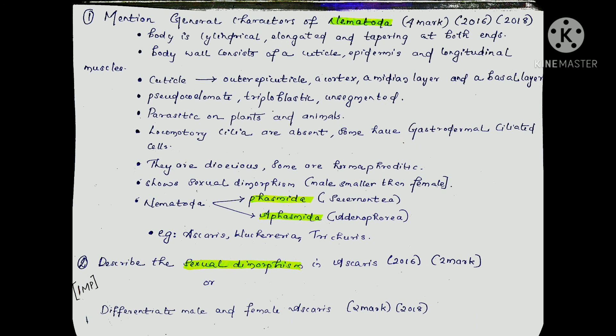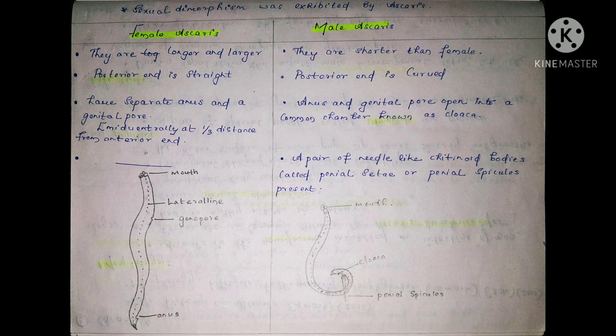First of all, we know Ascaris. Sexual dimorphism is important — it appeared in 2016 for random marks. Differentiate male and female Ascaris — this was asked in 2018. For Ascaris sexual dimorphism: female Ascaris are longer and larger, while male Ascaris are shorter than female.